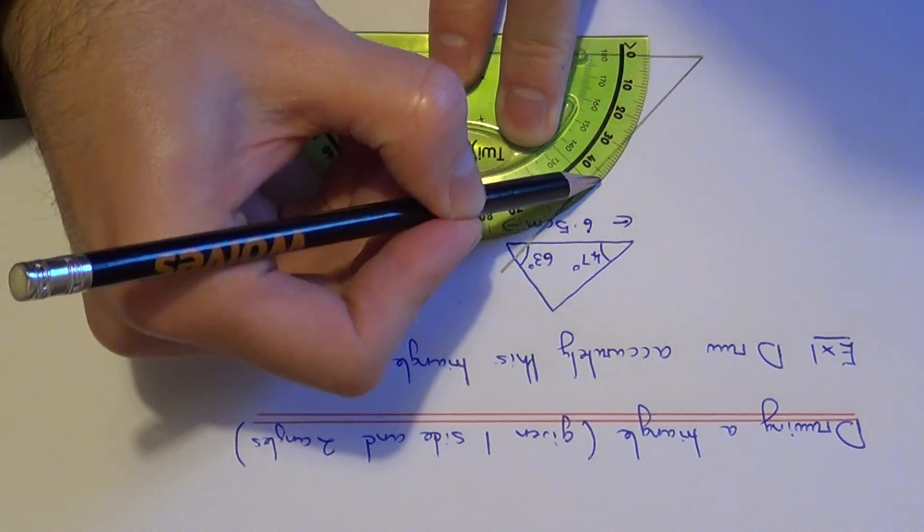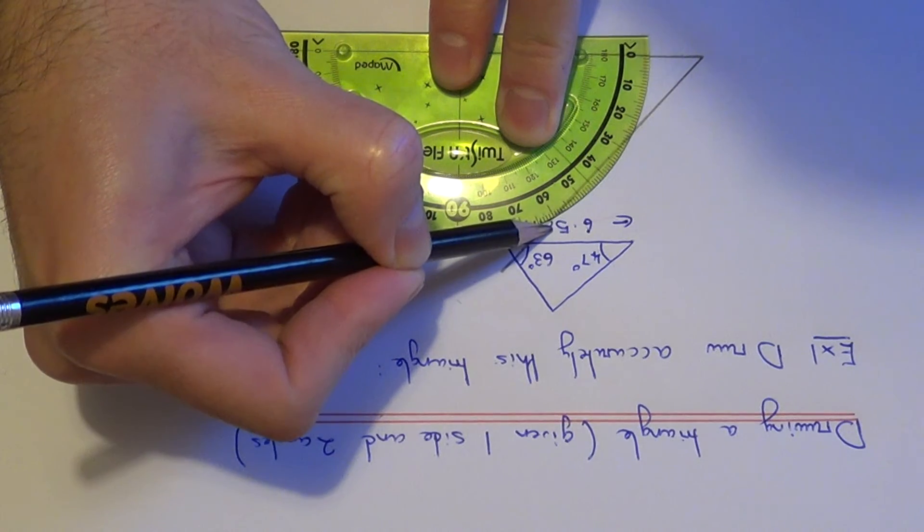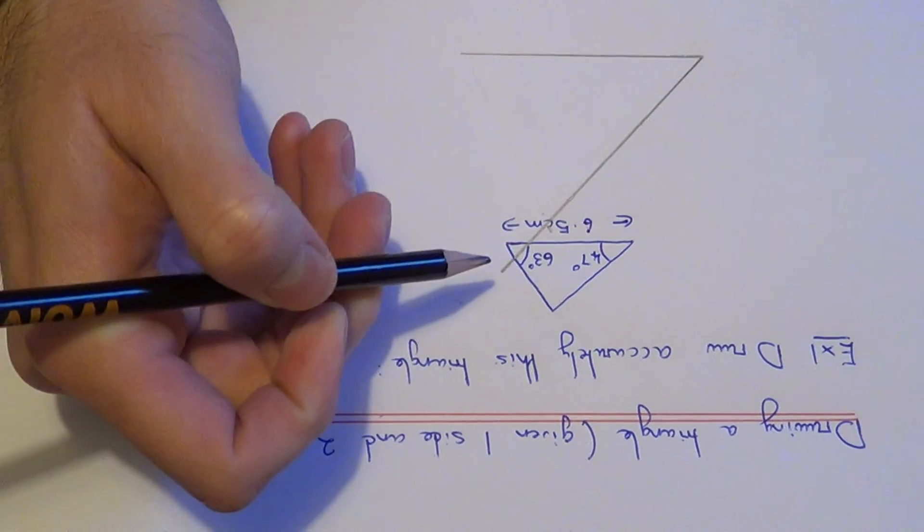So 10, 20, 30, 40, 50, 60, 63. Let's put a little marker there.